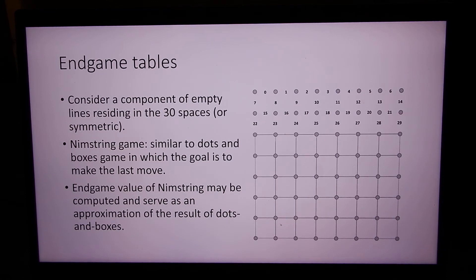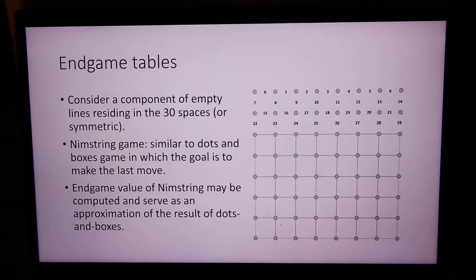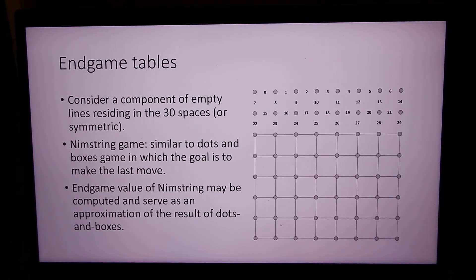Now, what about endgame tables? If we have components that are small enough, for example, if your component fits, a component is a contiguous set of empty lines. If they fit in this area up to 30 spaces, two to the power of 30, that's about a billion different endgames we have.